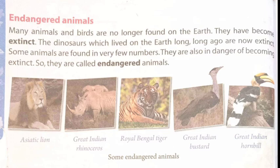As you can see from the pictures, endangered animals shown include: Asiatic lion, Great Indian Rhinoceros, Royal Bengal Tiger, Great Indian Bustard and Green Indian Hornbill.